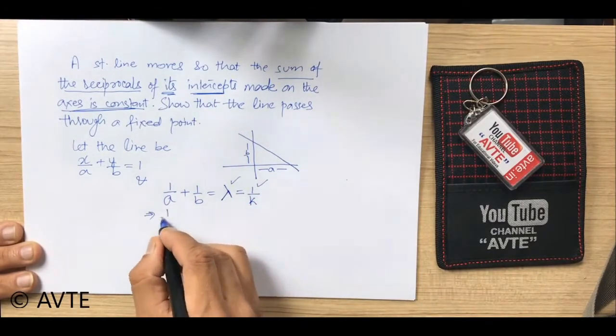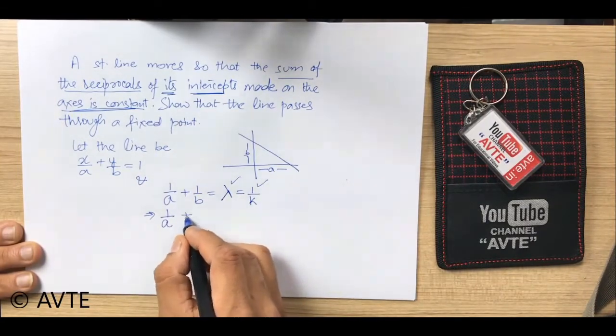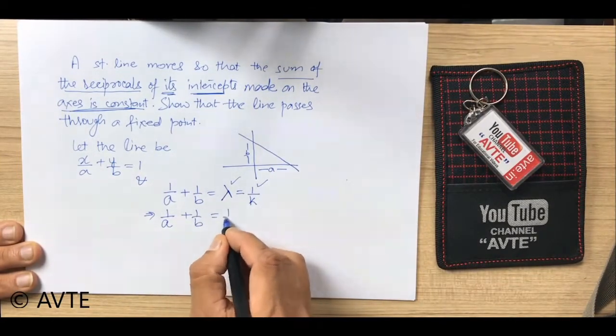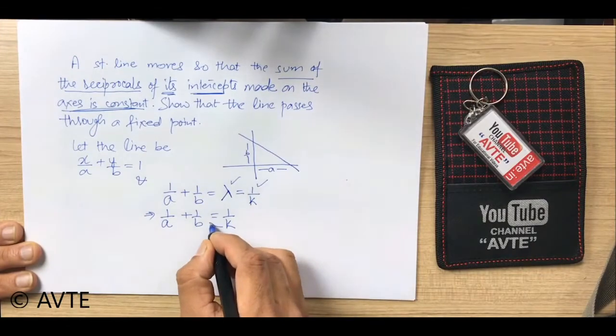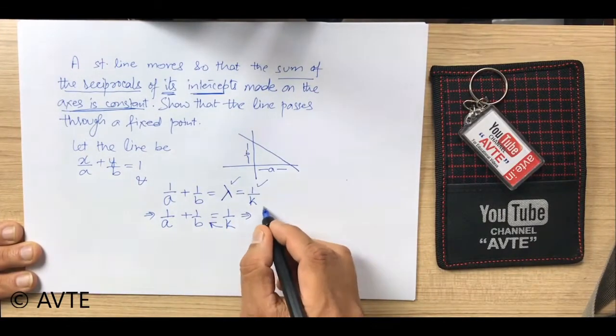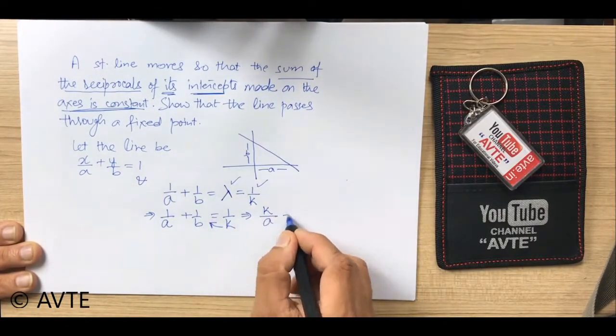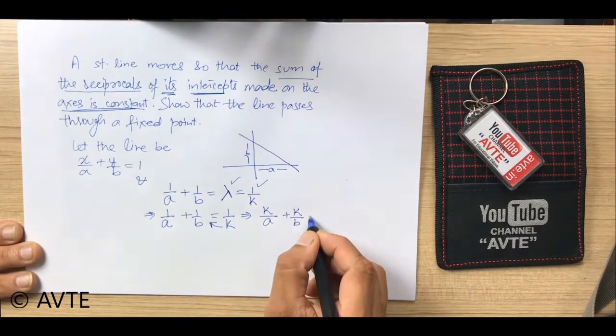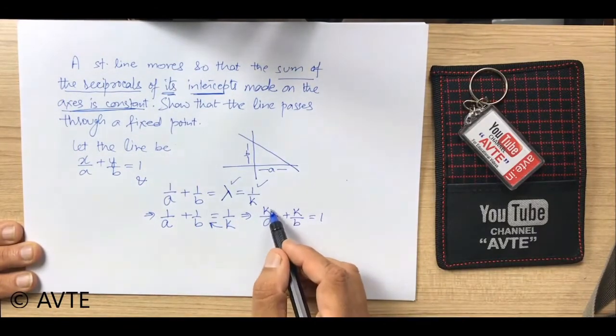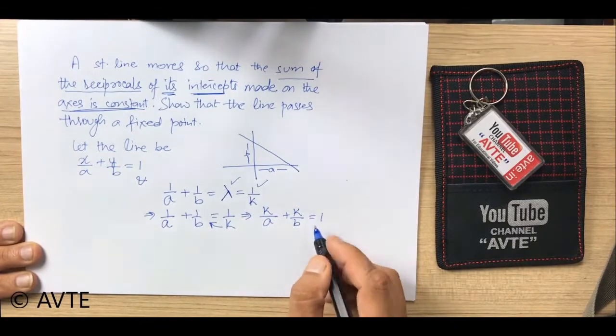And just see, we can write this as 1/a + 1/b = 1/k and we can cross multiply k on the other side and the expression is taking the shape which is k/a + k/b = 1.